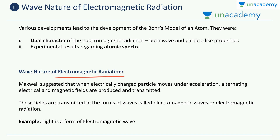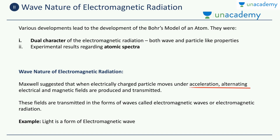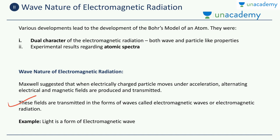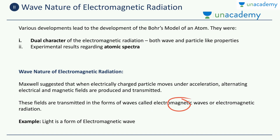Now let's discuss the wave nature of electromagnetic radiation. Maxwell suggested that when an electrically charged particle moves under acceleration, accelerating electrical and magnetic fields are produced and transmitted. This energy is radiated in the form of electrical and magnetic fields, and these fields are transmitted in the form of waves known as electromagnetic waves. 'Electro' refers to the electrical field and 'magnetic' refers to the magnetic field — it's a combination of both.